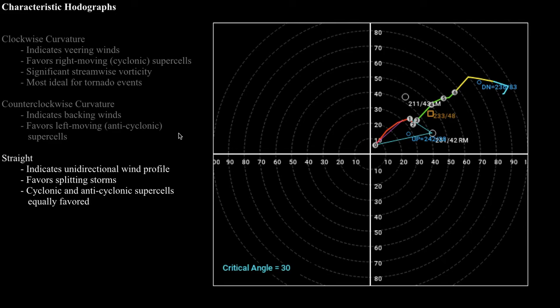A straight hodograph is basically one where the wind direction doesn't change very much as you go up in the atmosphere, technically indicating a unidirectional wind profile. This is somewhat common in parts of the warm season but can appear in other seasons as well. Usually when you see an environment like this, it indicates splitting storms — a thunderstorm that splits into two, one half becoming more cyclonic and the other more anti-cyclonic. You can get tornadoes from a straight hodograph but it's a much harder and lengthier process.